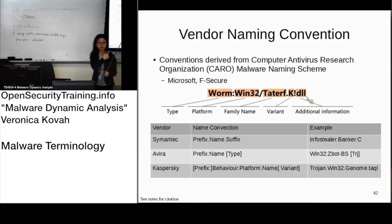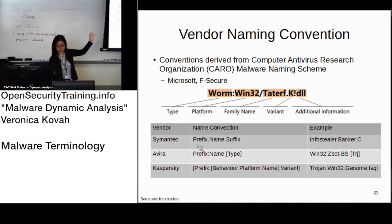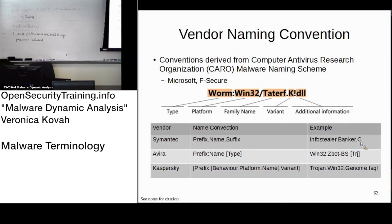Microsoft and AppSecure kind of follow this scheme depending on the convention. But Symantec uses a prefix, name, and suffix approach — where the prefix is functionality, then the family name, then the suffix as a variation. AVirus and Kaspersky also have their own different ways of naming malware.